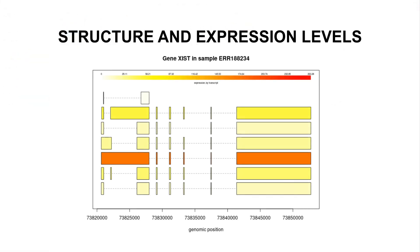Let's look at the first figure, which shows the structure and expression levels of isoforms for the gene SIST in sample ER188234. There are six isoforms for this gene. The expression levels are represented using a color scheme: the lighter side indicates low expression and the darker side represents high expression. Isoform number four is highly expressed compared to the others.